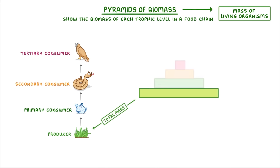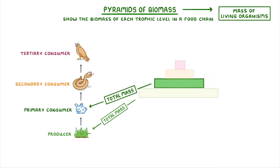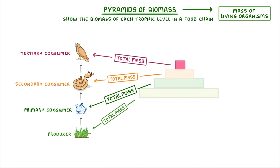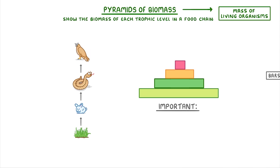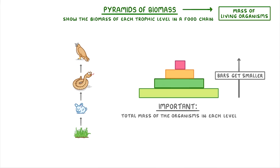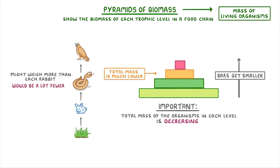The bar at the bottom represents the total mass of all the grass in the food chain, whereas the next bar represents the total mass of all the rabbits, then the next one represents the total mass of all the snakes, and so on. The important thing to notice is that the bars get smaller as you go up the trophic levels. So even though each individual snake might weigh more than each rabbit, there would be a lot fewer snakes than rabbits.